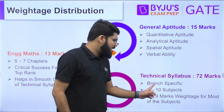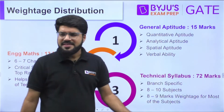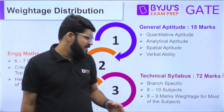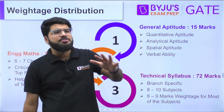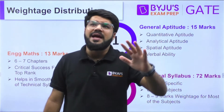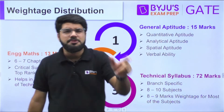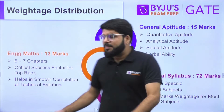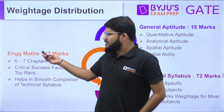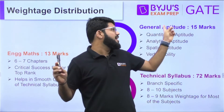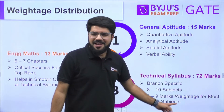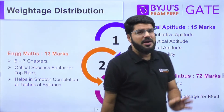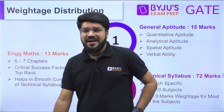The remaining 72 marks is purely the technical syllabus, which is branch-specific — Electronics has their syllabus, Civil has their own, etc. Around 8 to 10 subjects fall into this depending on the branch, each carrying approximately 8 to 9 marks weightage, though some subjects have higher weightage of 10-11 marks, and for Mechanical, Production can go up to 15 marks. As an engineer, be smart: first maximize the 28 marks from GA and Maths, then focus entirely on each technical subject to be a topper.